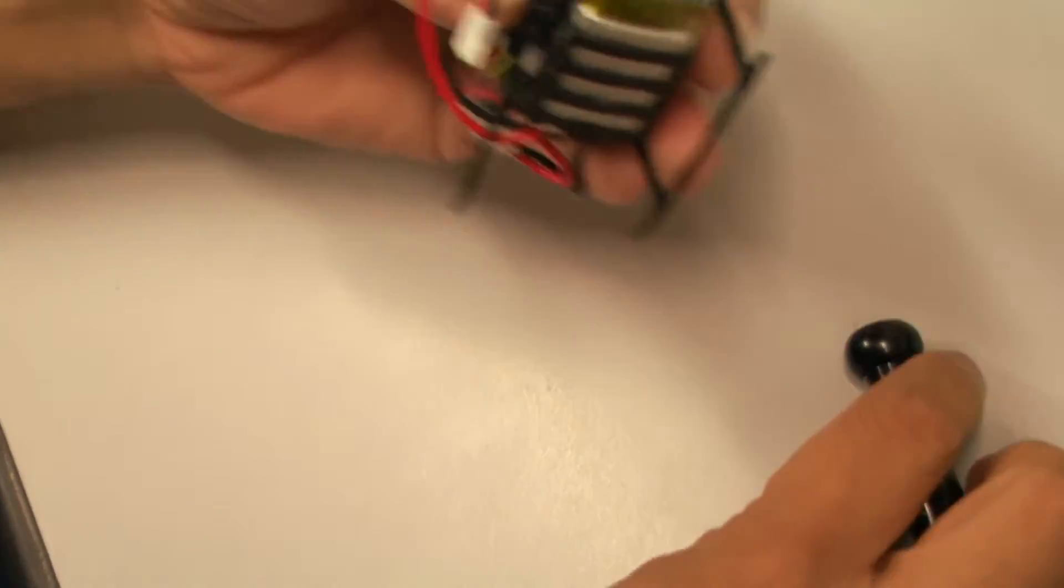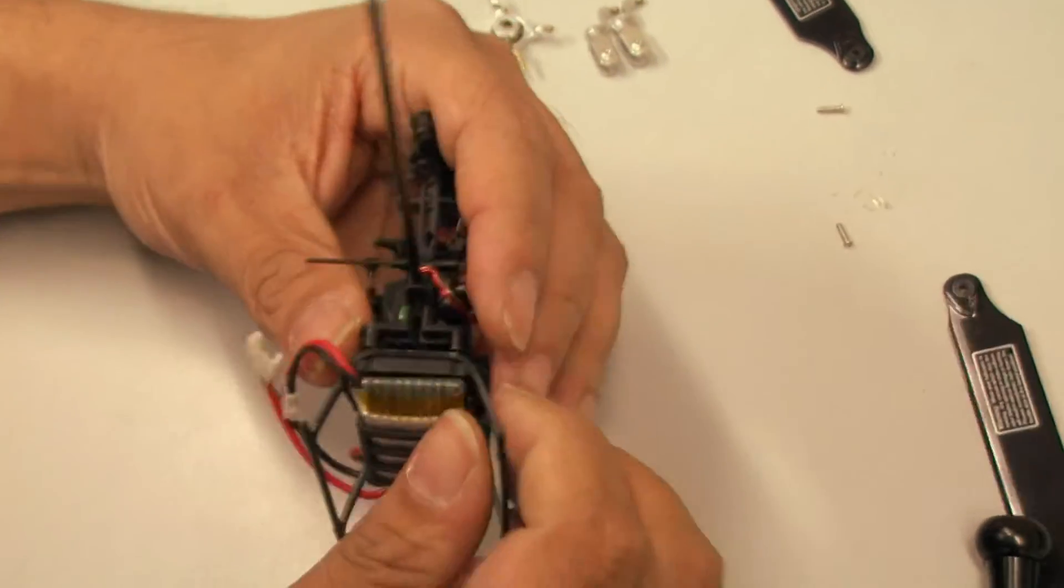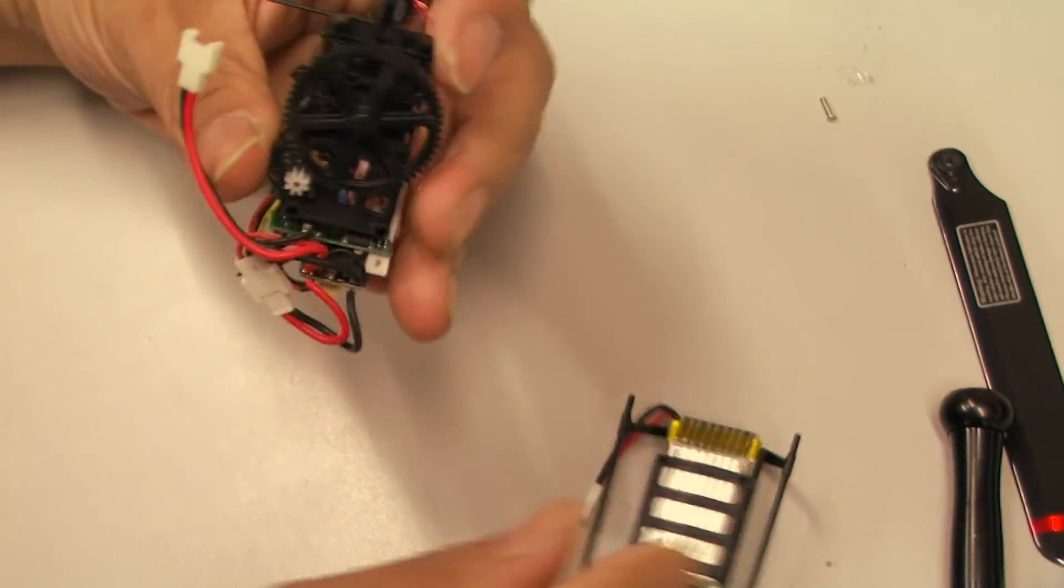Okay, now that's done. Then remove the landing skid by simply just pulling it out. There you go.